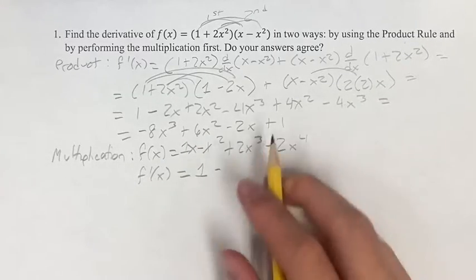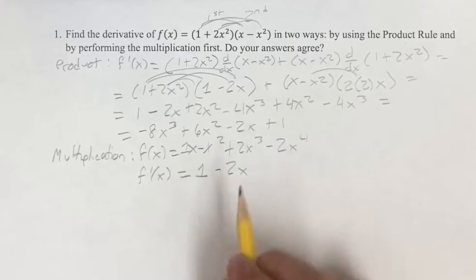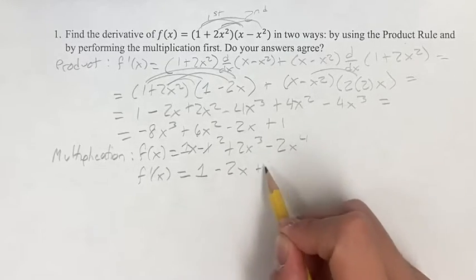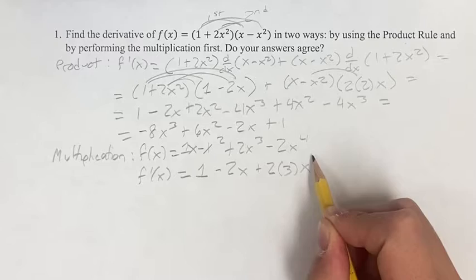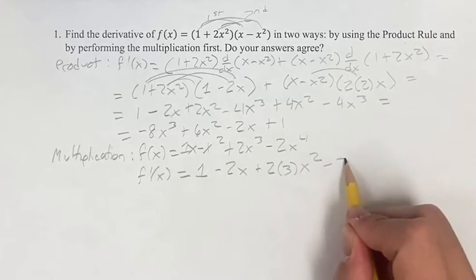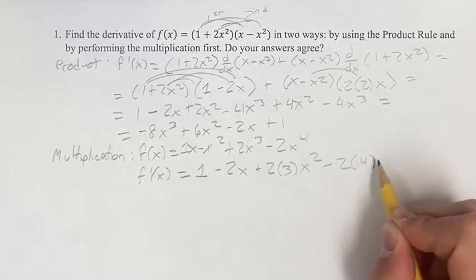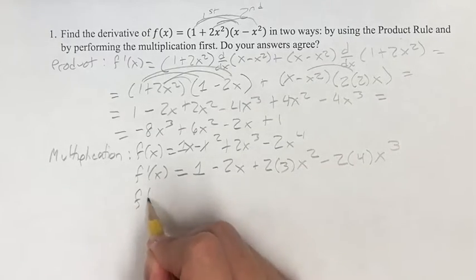Minus derivative of x², bring down the exponent, subtract 1 for the new exponent. Plus 2, bring down the exponent, subtract 1 for the new exponent. Minus 2, bring down the exponent, subtract 1 for the new exponent...